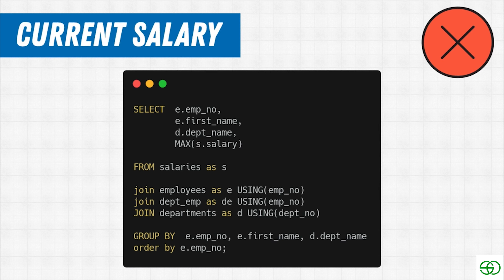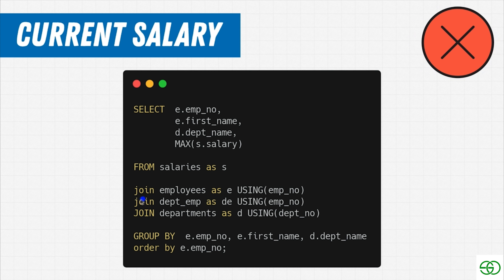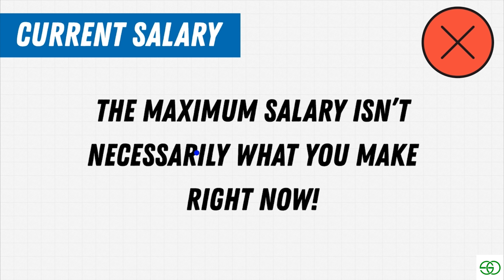In a previous video we looked at how to get the current salary of an employee — the most recent salary. We tried to do it with GROUP BY, but we didn't hit the mark. Using MAX salary works if salaries only progress forward, but if people move between departments and take salary cuts, or there's a recession and everyone takes a pay cut, then your max salary isn't necessarily your current salary.